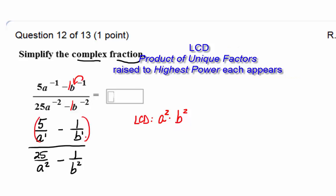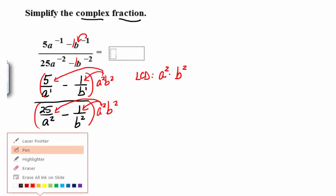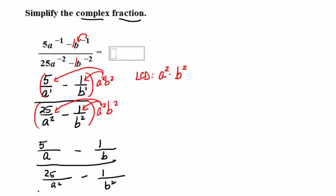So now I'm going to multiply the numerator by a squared b squared, but I can only do that if I also multiply the denominator and make an equivalent fraction. Now this is just like multiplying by a whole number. You could think of it as being over one. It's only going to multiply into each of the numerators in both of the little fractions in the top and the bottom. So I'm going to copy down what I had before, except now I'm going to multiply a squared b squared to each of those numerators.